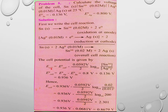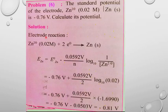To summarize problem 5: the cell potential equals the standard electrode potential minus (0.0592 / n) × log(products / reactants). Putting in the values gives the answer. Now moving to problem number six.